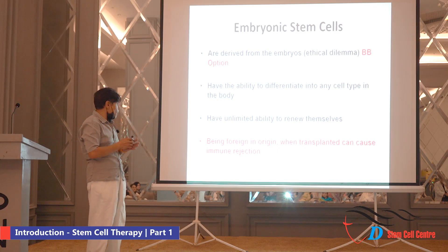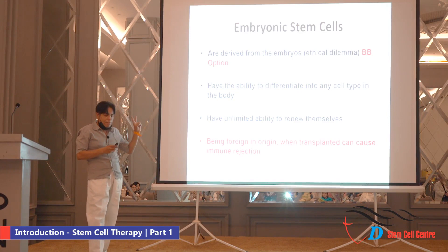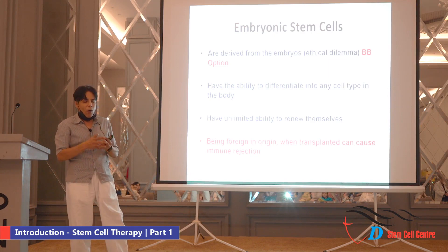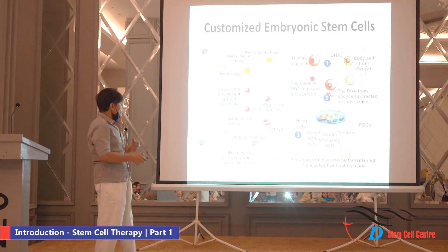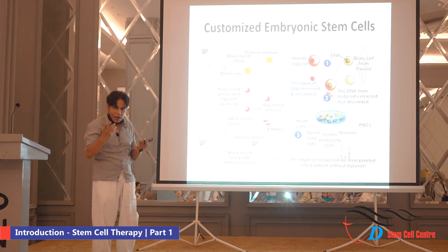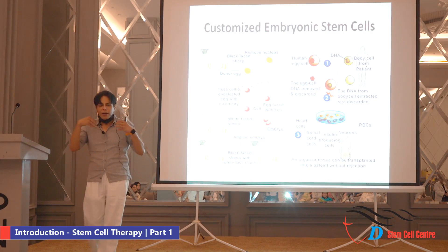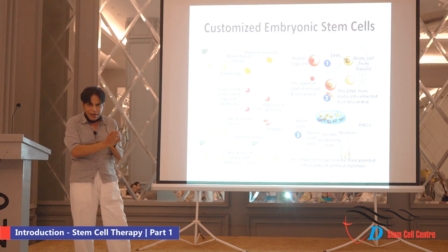Another impediment to using embryonic stem cells, besides the ethical dilemma, is that since they are foreign in origin, they will result in an immune response — your immune system will recognize them as a foreign entity and attack them. You can actually overcome that problem if you do what cloning basically is: take a nucleus from a somatic cell and inject it into a fertilized egg, and the embryo you generate will have the same genetics as the donor.